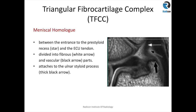The meniscal homolog is between the entrance to the prestyloid recess and the extensor carpi ulnaris tendon, and it divides into fibrous and vascular parts. The fibrous part and the vascular part — which is a bit more hyperintense — attaches to the ulnar styloid process.